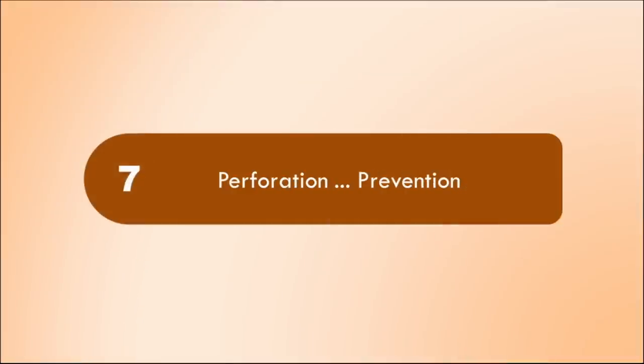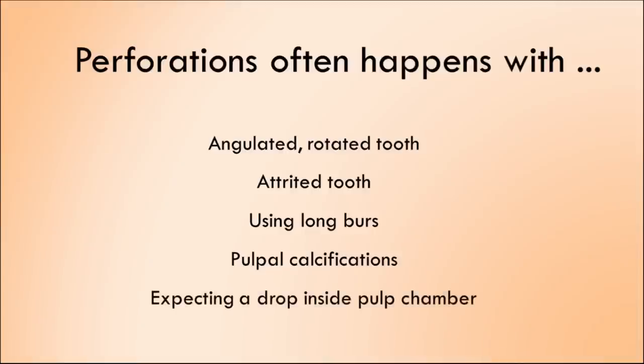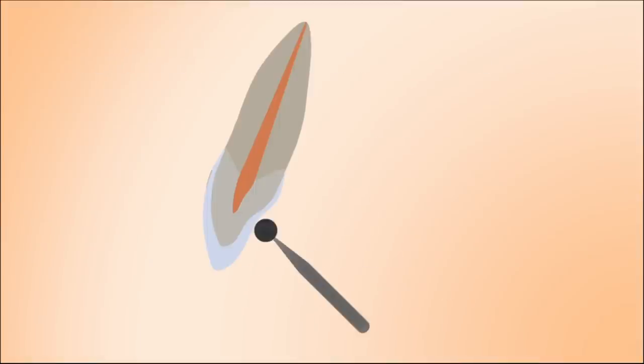Most dentists who hate to do root canal treatment are afraid of one error that they fear of committing. It's perforation. Perforation can happen above the gingival level or below the gingival level or in furcation area. Let's see the common reasons for perforations. Angulated or rotated tooth, attrited tooth, using long burrs, pulpal calcifications and expecting a drop inside the pulp chamber as mentioned in textbooks are the frequent reasons for perforations to happen. Let's see the common reason for perforation in anterior teeth. Always remember maxillary anterior teeth are inclined. They are not straight.